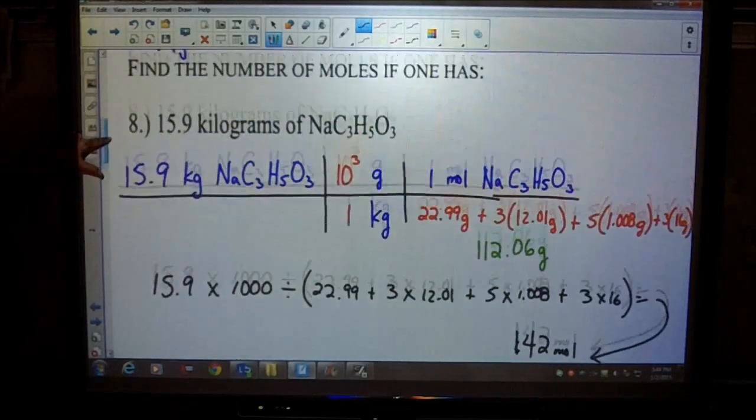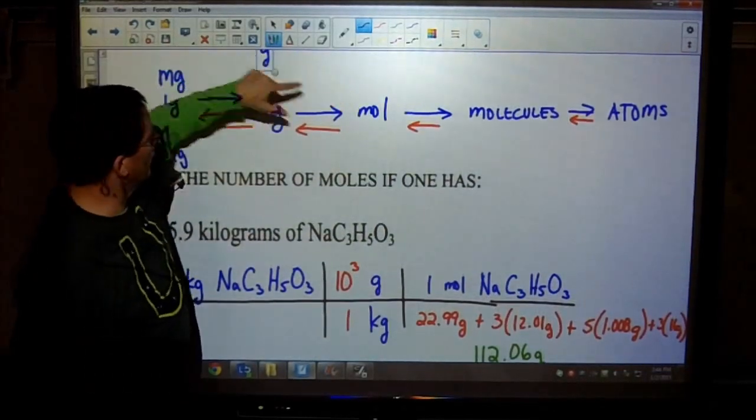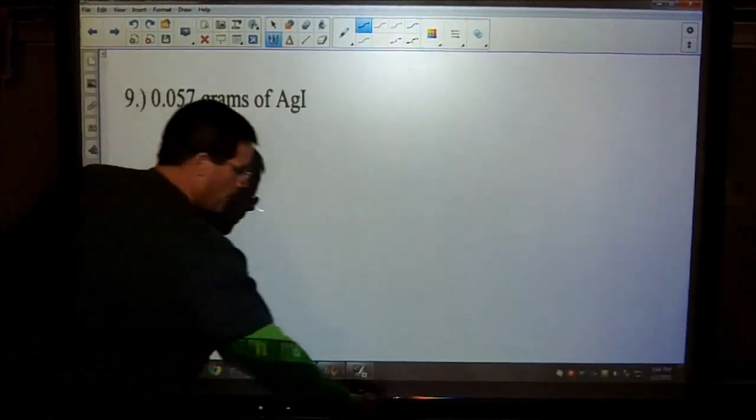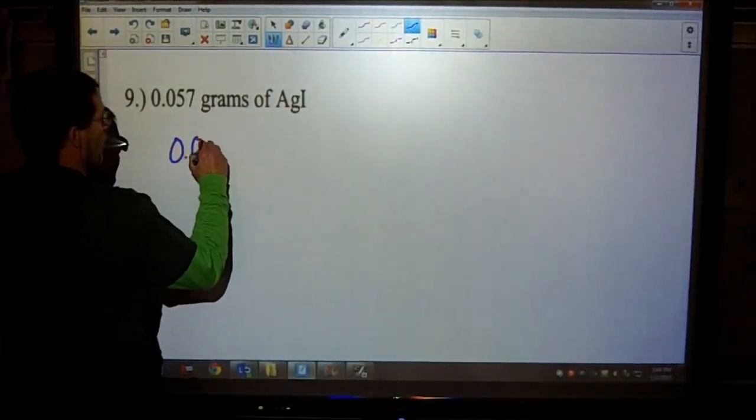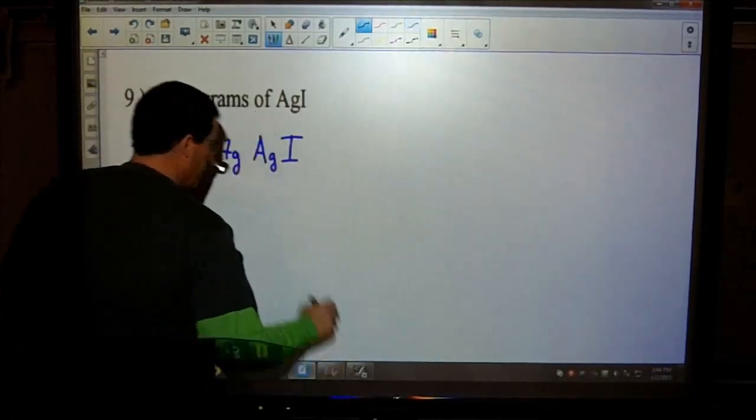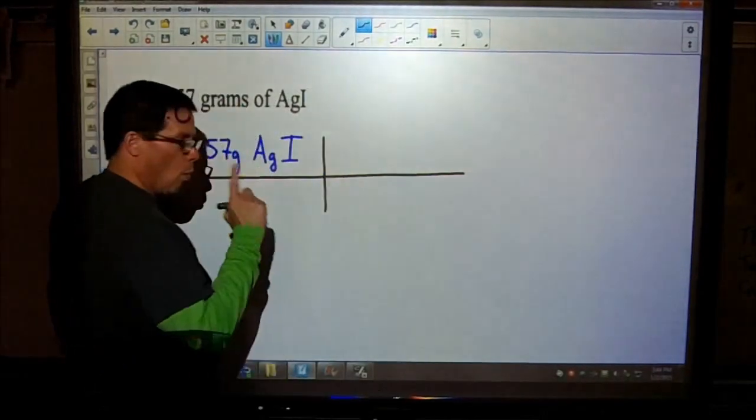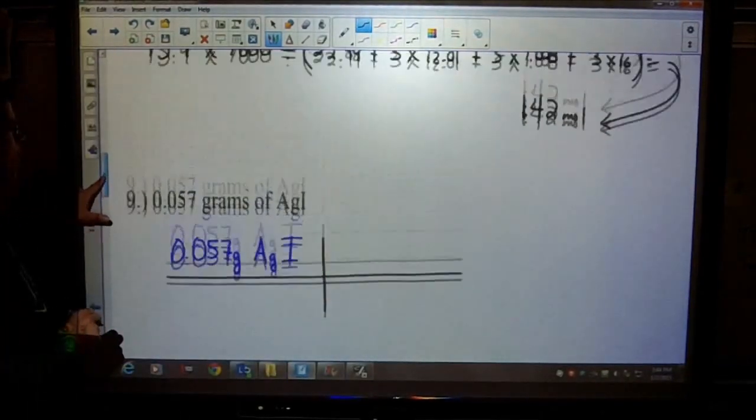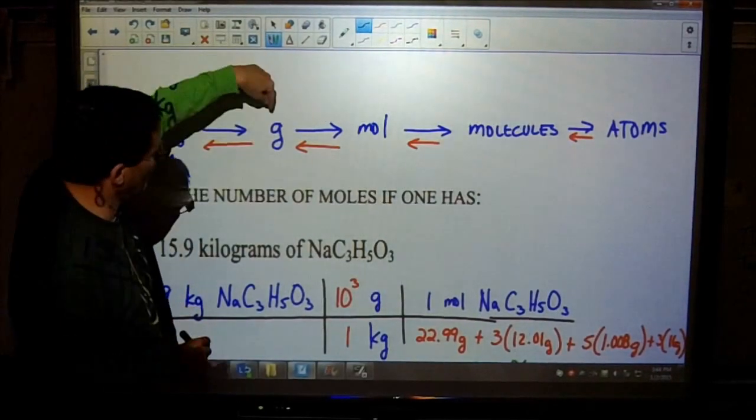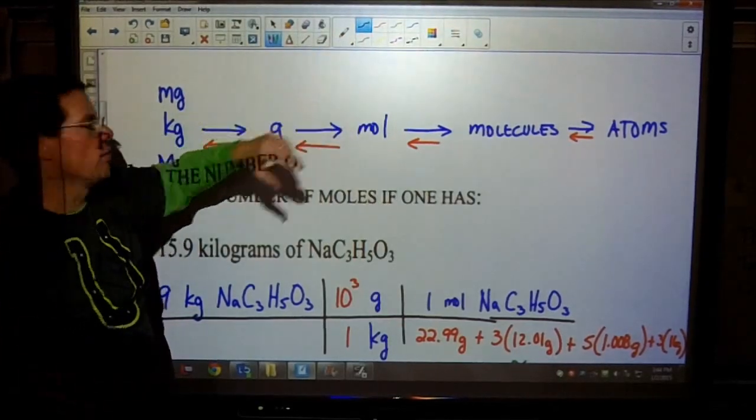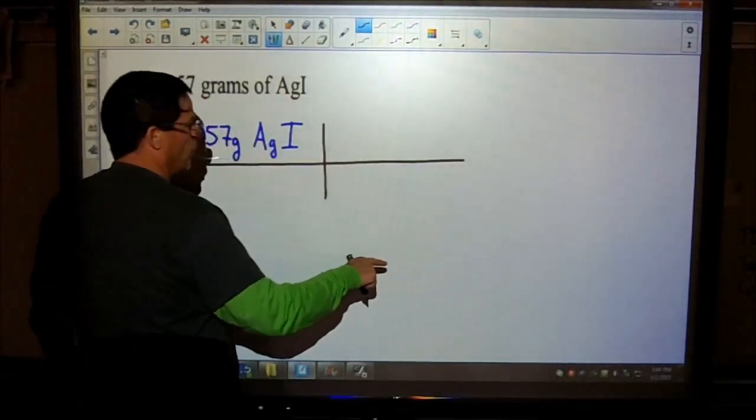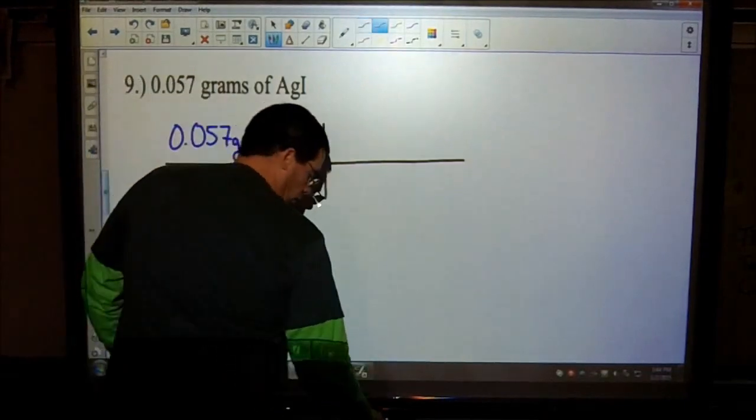We start off with grams of silver iodide. So if we start with grams, then we're going to go from here to here. It looks like it's going to be a one-stepper. Start off with what you know. In this case, we have 0.057 grams of silver iodide. This is a one-step process because we are starting with grams and we're going to moles.